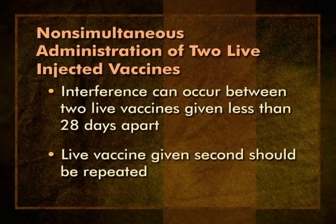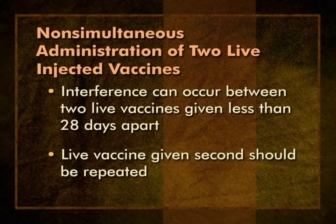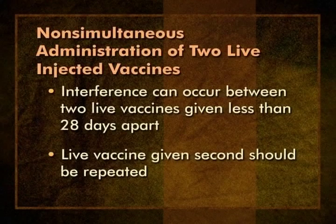ACIP recommends that when two injected or intranasal live vaccines are not given on the same day but are separated by less than 28 days, the live vaccine given second should be repeated unless serologic testing indicates that a response to the vaccine has occurred. For example, if a dose of MMR were given two weeks after a dose of varicella vaccine, the MMR should be repeated—the repeat dose should be spaced at least four weeks after the invalid dose. The four-week separation rule does not apply to rotavirus or oral typhoid vaccine, which can be administered at any time before or after any other vaccine. You can and should give all routine vaccines simultaneously—that is the gold standard.